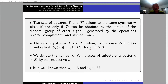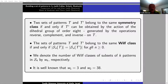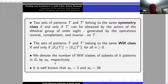We call T and T-prime belonging to the same symmetry class if T-prime can be obtained by simple action from T, which means reversal, complement, or inverse. And we say T and T-prime belong to the same Wilf class if and only if the number of permutations that avoid T is the same as the number of permutations that avoid T-prime for any n. We denote the number of Wilf classes of subsets of k patterns in S4 by w(k).